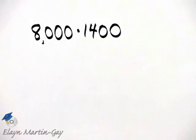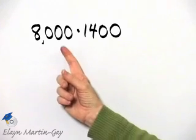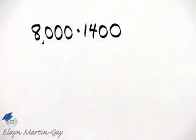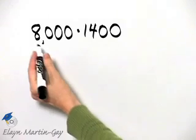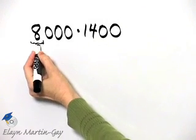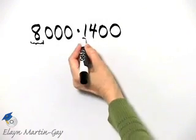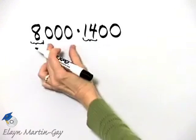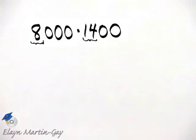Now you can multiply using our regular long method of multiplication, or since we are multiplying two whole numbers ending in zeros, we can use a shortcut process. Now that process will begin by simply multiplying 8, the digit 8, by 14. And then we'll insert zeros to the end of that product.